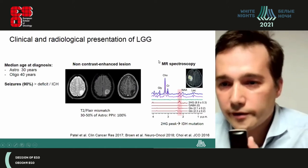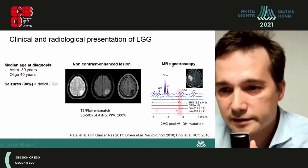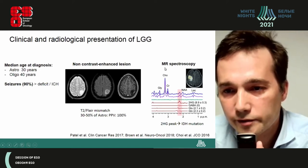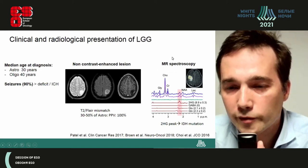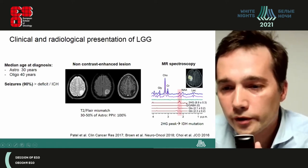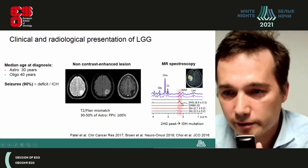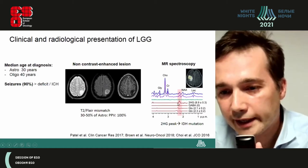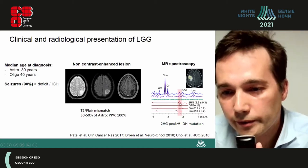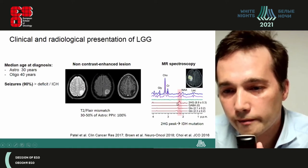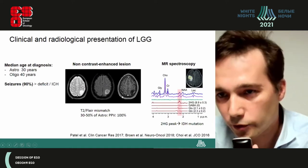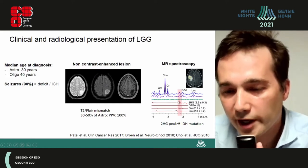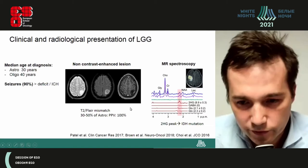Certain teams with very advanced MRI developments and spectroscopy software can detect in the tumour the 2-hydroxyglutarate peak, which is the consequence of the IDH mutation. It is likely that in the future, this will help confirm the diagnosis of a true IDH mutant glioma and could also help monitor the activity of treatment.